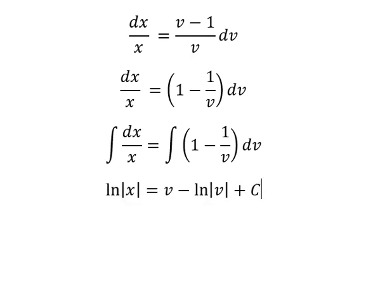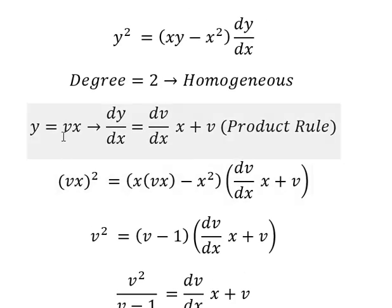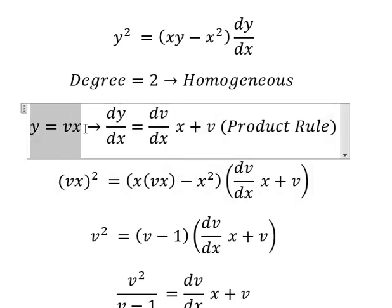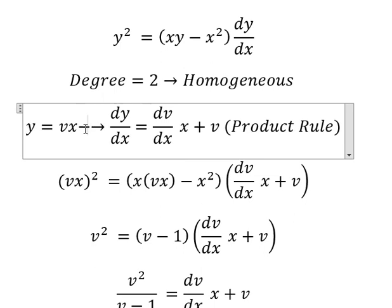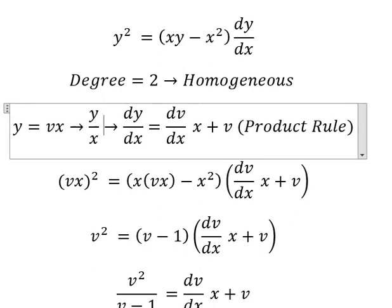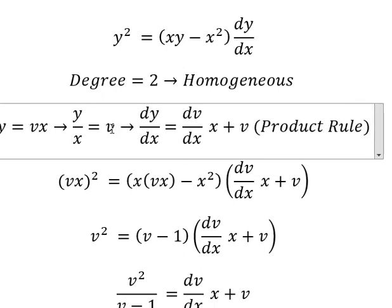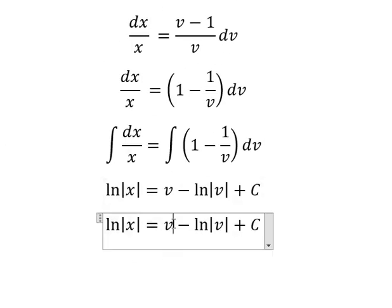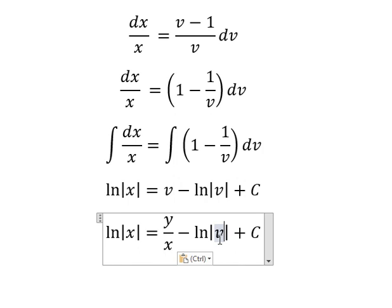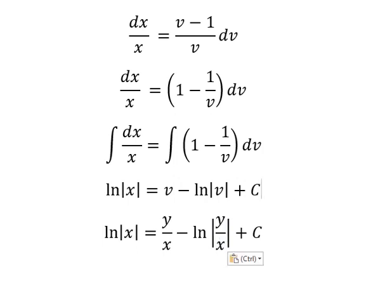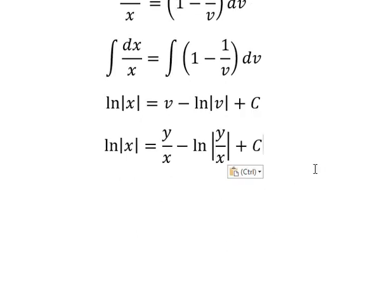v is this one, so we divide both sides by x. And now we need to change v into this one. So we have the formula here.